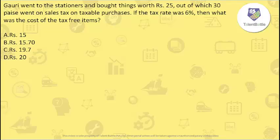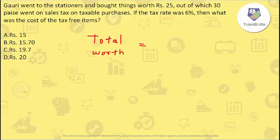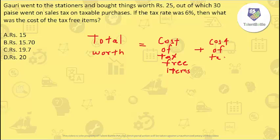This particular question was asked by Anushtha Chaturvedi from Graphics Era University, Dehradun. The question is: Gavri went to the stationers and bought things worth Rs. 25, out of which 30 paise went on sales tax on taxable purchases. If the tax rate was 6%, what was the cost of tax-free items? The total worth is 25 rupees. Total worth = cost of tax-free items + cost of taxable purchases + actual tax paid.